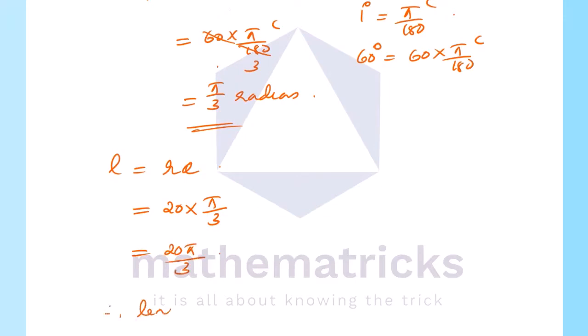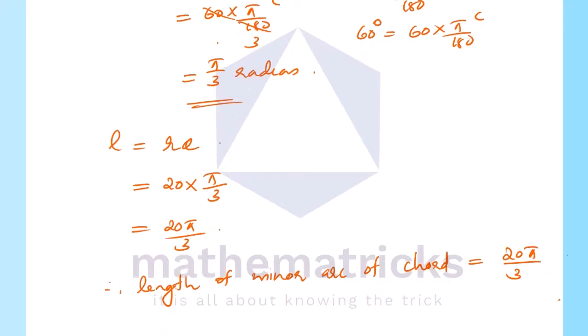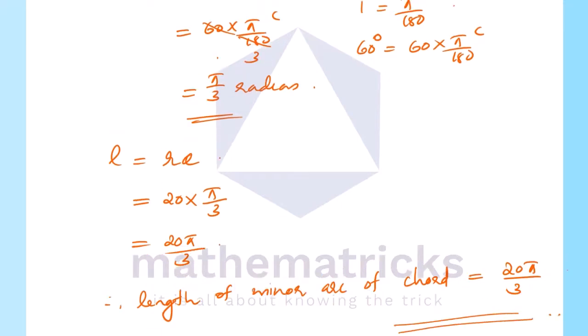Therefore the length of the minor arc of the chord is equal to 20π/3 cm. If you have any problems, you will receive feedback. The remaining questions will be in the next session. Thank you.